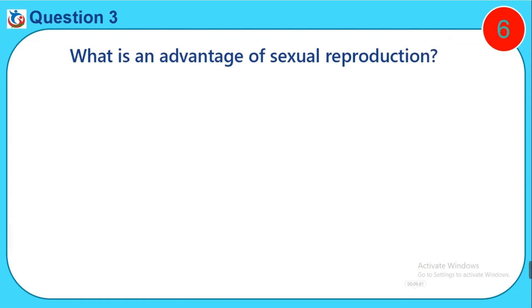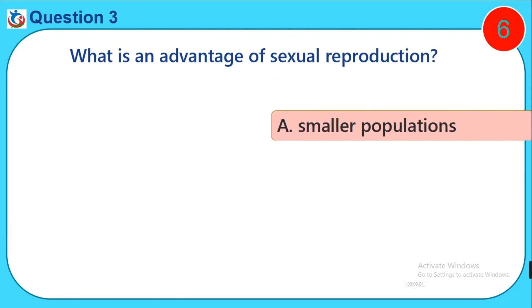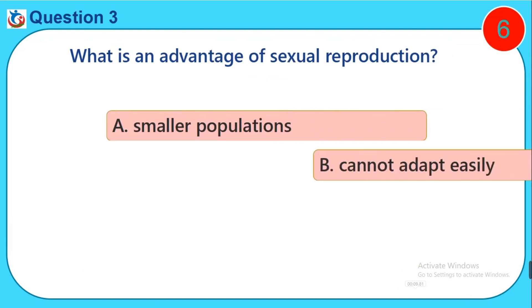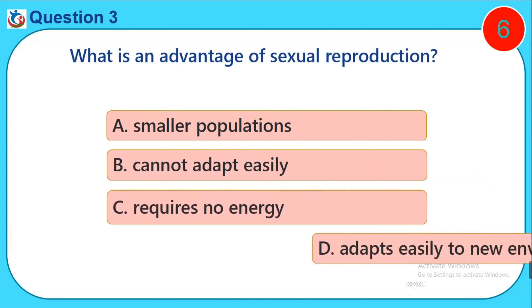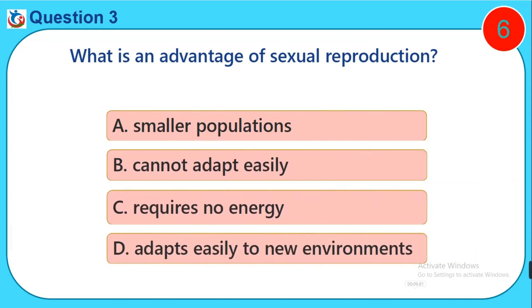Question three: What is an advantage of sexual reproduction? A) Smaller populations, B) Cannot adapt easily, C) Requires no energy, D) Adapt easily to new environments.